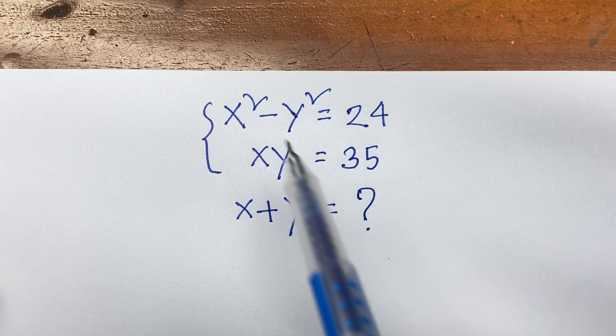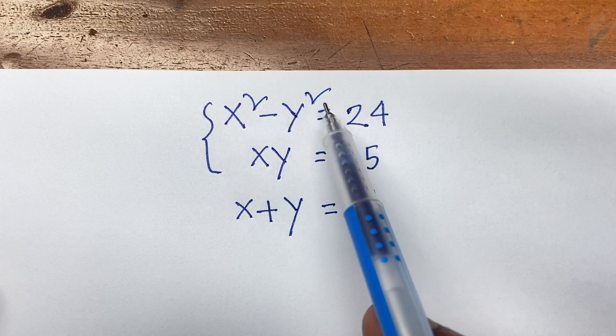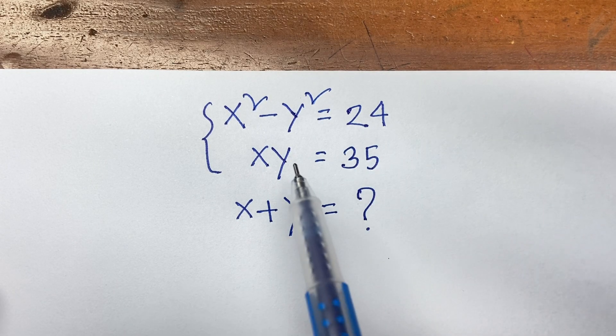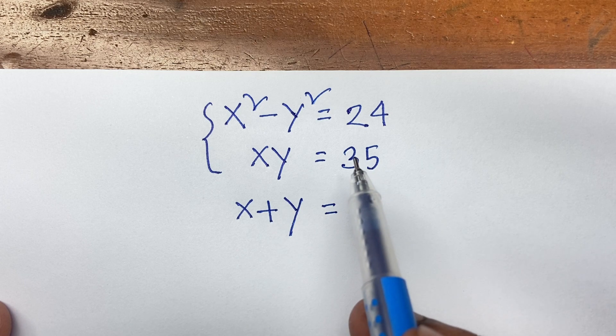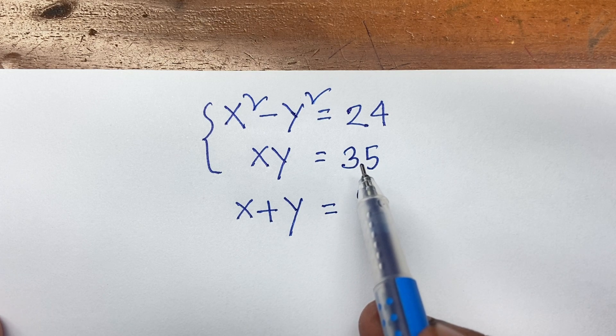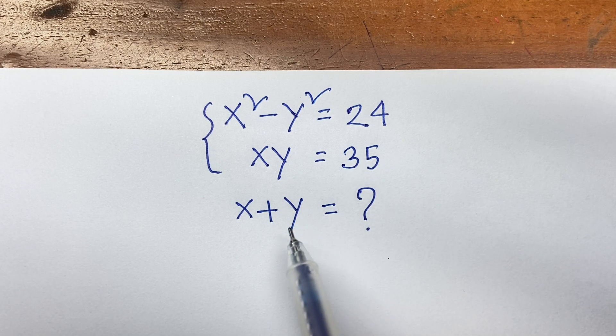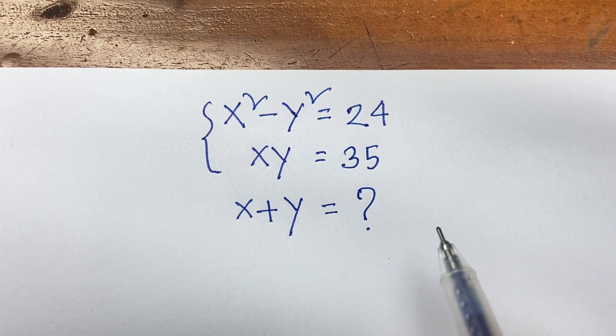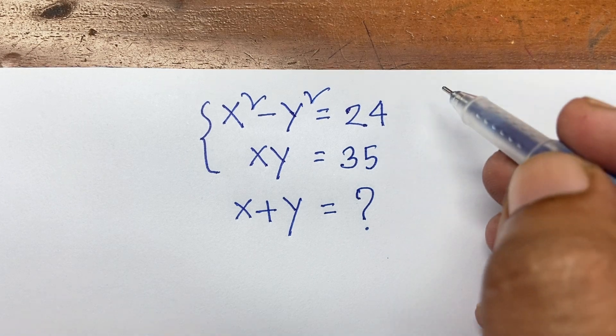Hello everyone. How to solve x squared minus y squared equals 24, and xy equals 35. Find x plus y equals what?